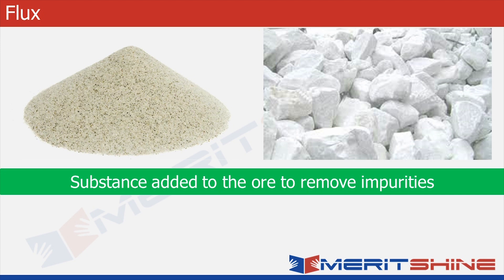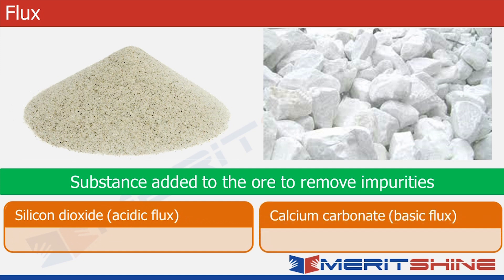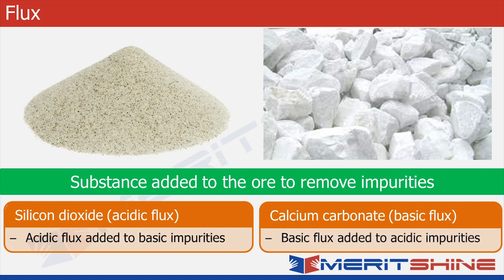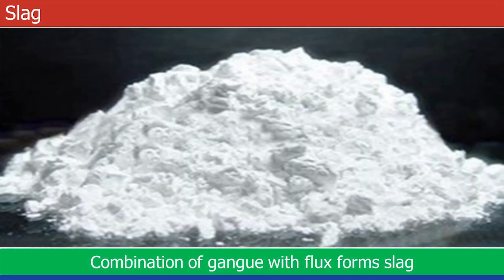The next term is flux — a substance added to ore to remove impurities is called flux. There are two types: acidic flux, which is added to remove basic impurities, and basic flux, which is added to remove acidic impurities. The combination of gangue with flux forms a fusible material called slag, which can be easily removed.